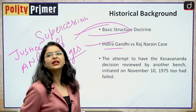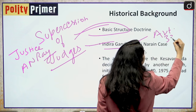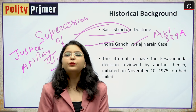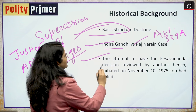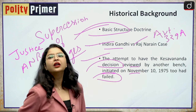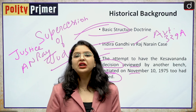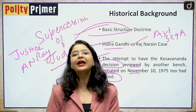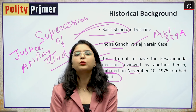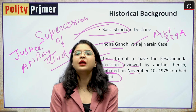Then came the Indira Gandhi versus Raj Narain case — another turning point in the history of India. In this case, Article 329 clause A was declared as unconstitutional by the Honourable Supreme Court of India, and this was another blow to the government. Then the attempt to have the Kesavananda Bharati decision reviewed by another bench initiated on November 10, 1975, had failed because lawyers argued that you cannot constitute a bench without a review petition. That special bench formed by Justice A.N. Ray to reconsider the Kesavananda Bharati judgment, in which the basic structure doctrine was evolved, finally failed and had to be dismantled. All of this led to the enactment of the 42nd Constitutional Amendment Act of India.